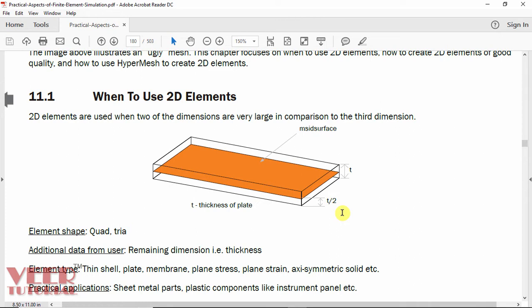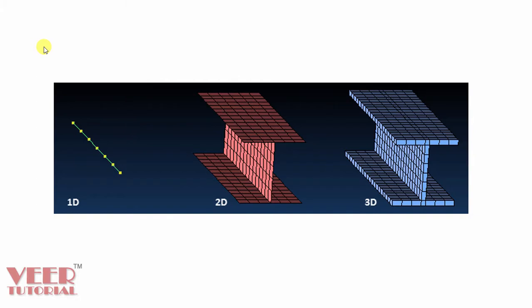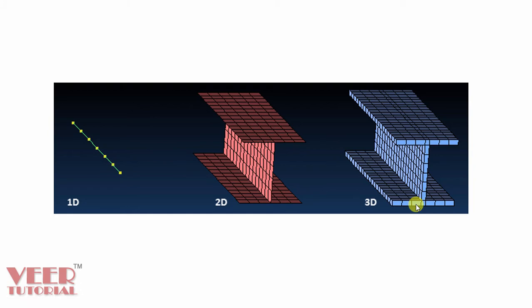Mid-surfacing is very useful in case of sheet metal components and plastic components. It is highly recommended for components where thickness is very less. Looking at the comparison picture, we have 1D meshing with bar elements, 2D meshing which has no thickness, and 3D meshing which has thickness and creates a volume. When we create a 3D mesh, it creates a lot of elements. Since the thickness is very less, we can extract the middle surface and generate 2D meshing instead.